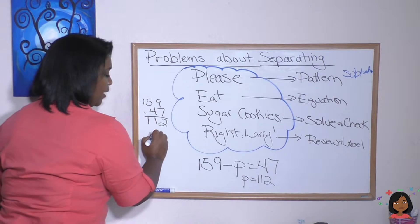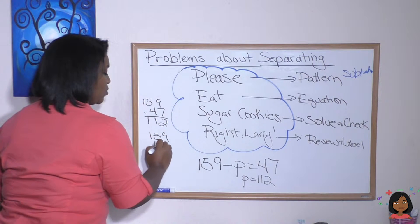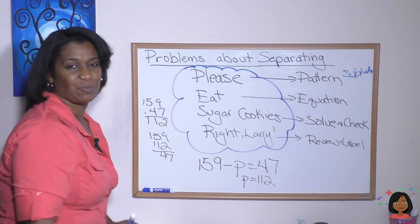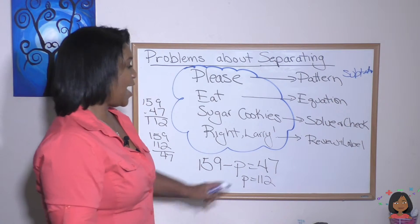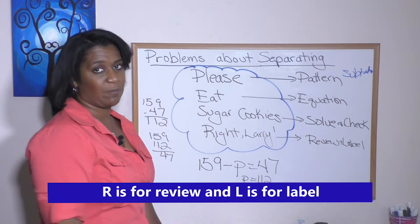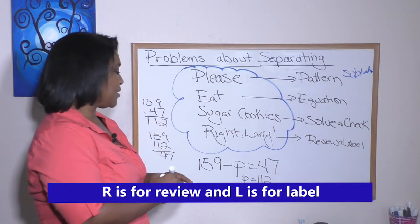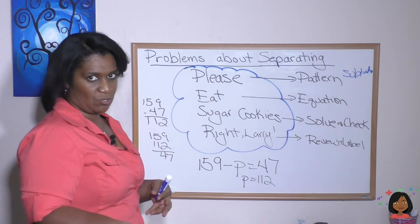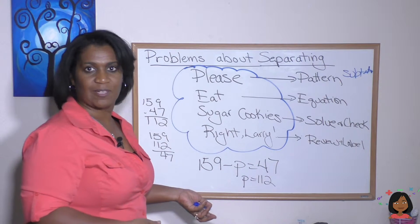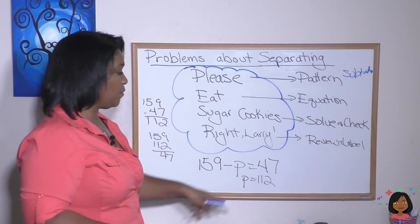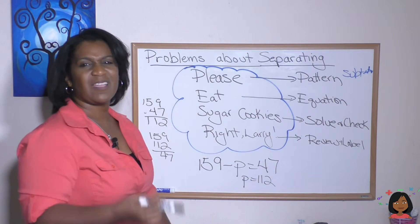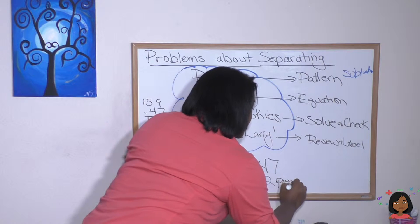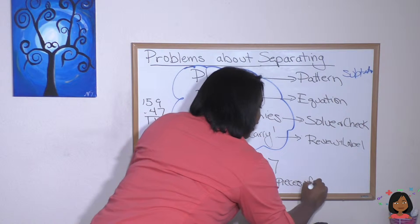I'm going to check my answer by putting it back in: 159 minus 112 gives me 47, which means it checks out. And lastly, we review and label. Does it make sense? If I had 159, then we ate about 112, and I would have 47 left — that makes sense. Our label is 112 pieces of popcorn.